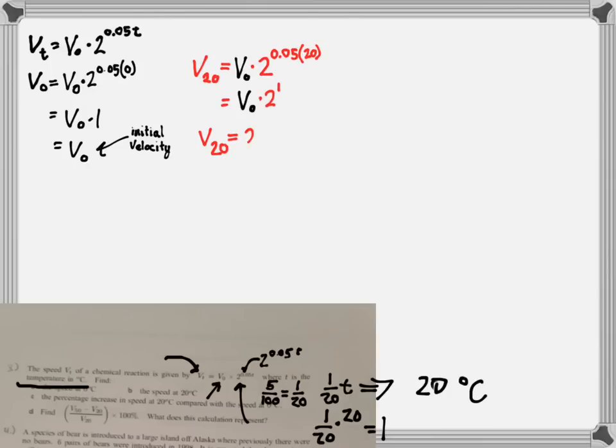Now, calculating V sub 20, all I have to do is put in 20 for T and get 0.005 times 20. And here we can see, just like I said before, at 20 degrees Celsius, we are going to double the initial velocity. So the velocity is V sub 0 at the start at 0 degrees Celsius, and 20 degrees hotter is going to double that initial speed. So I don't know how much it is, but I do know it's double.